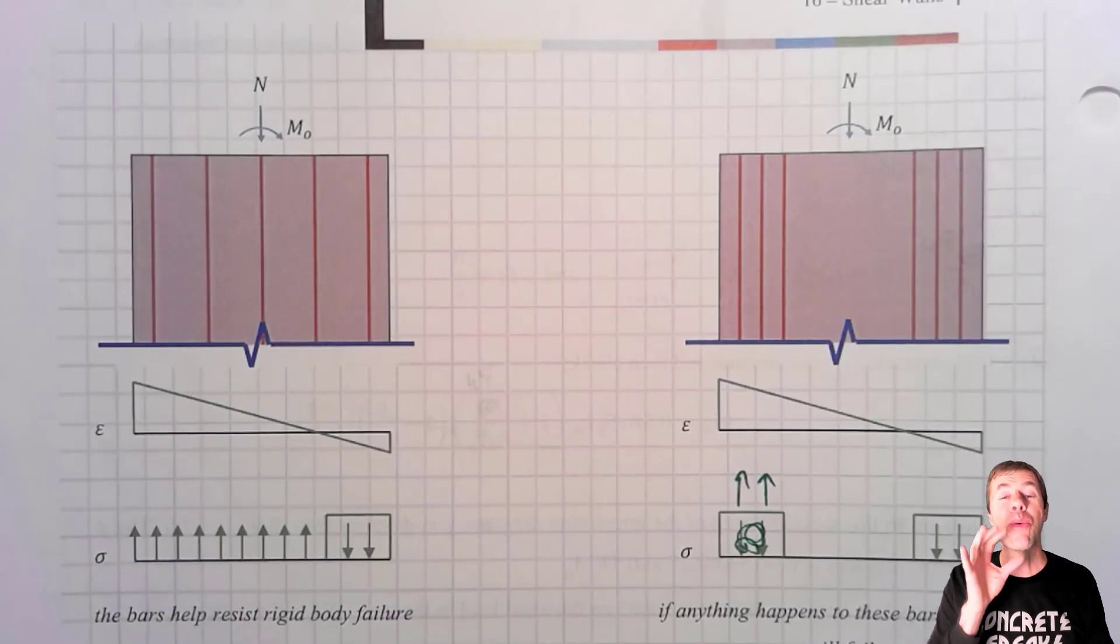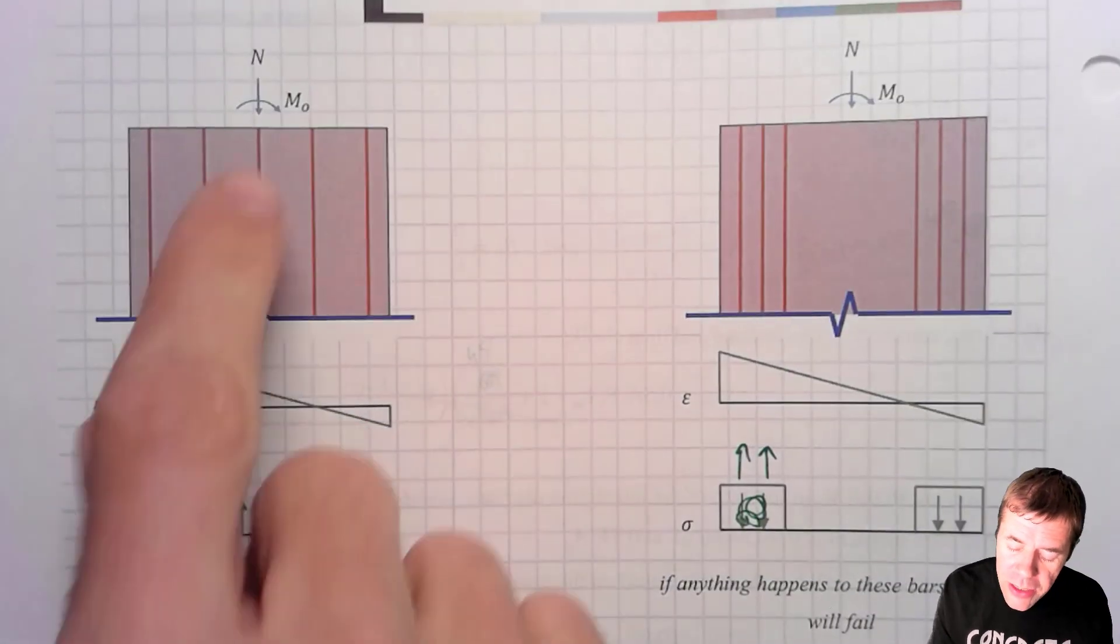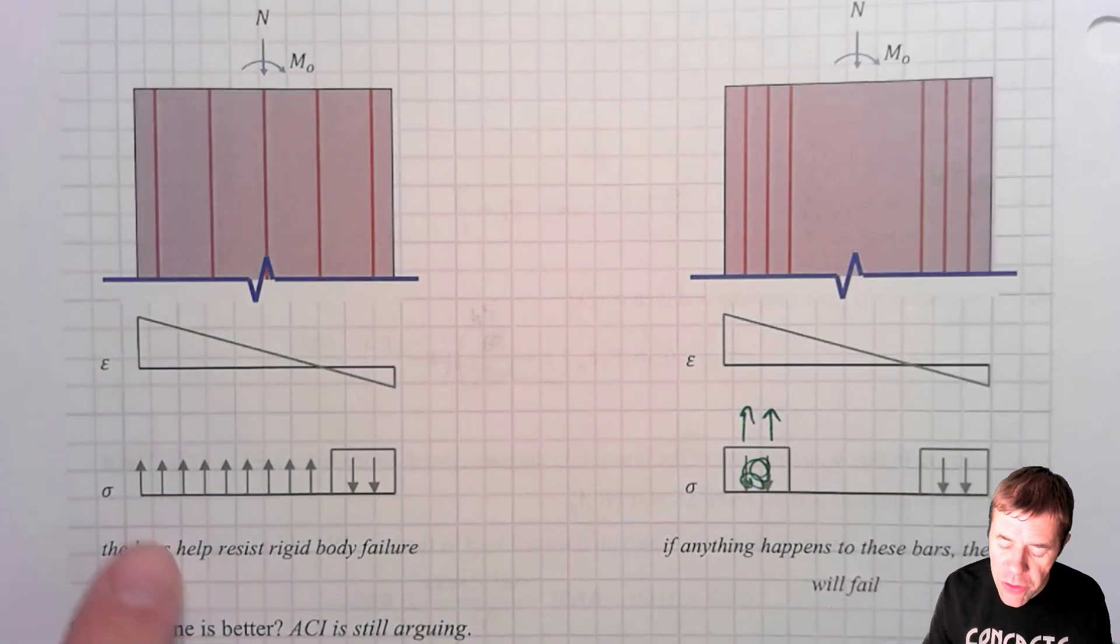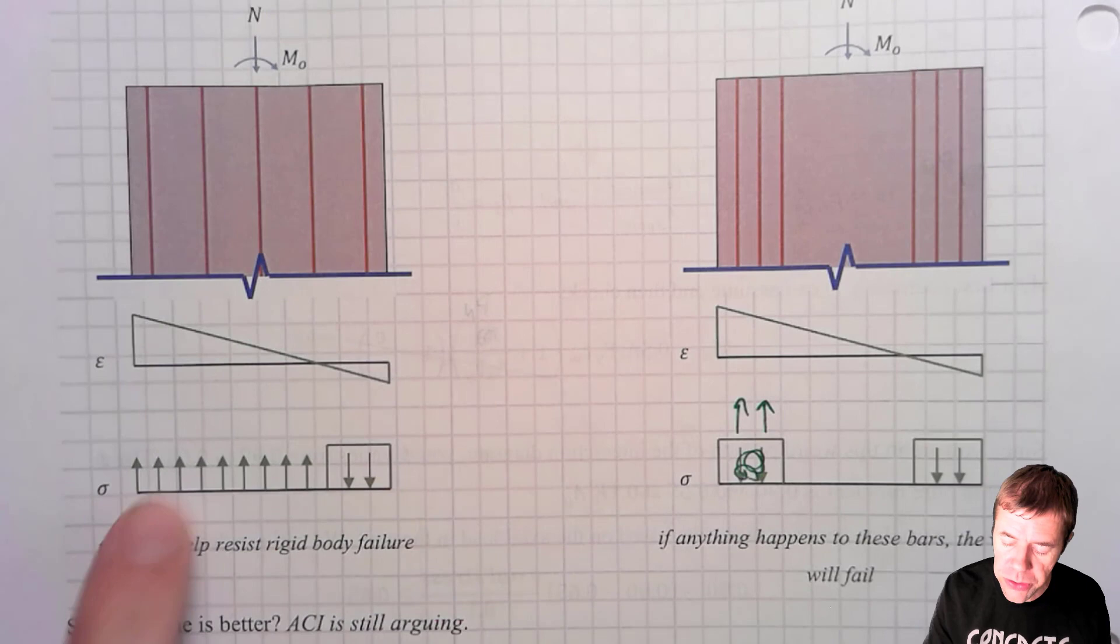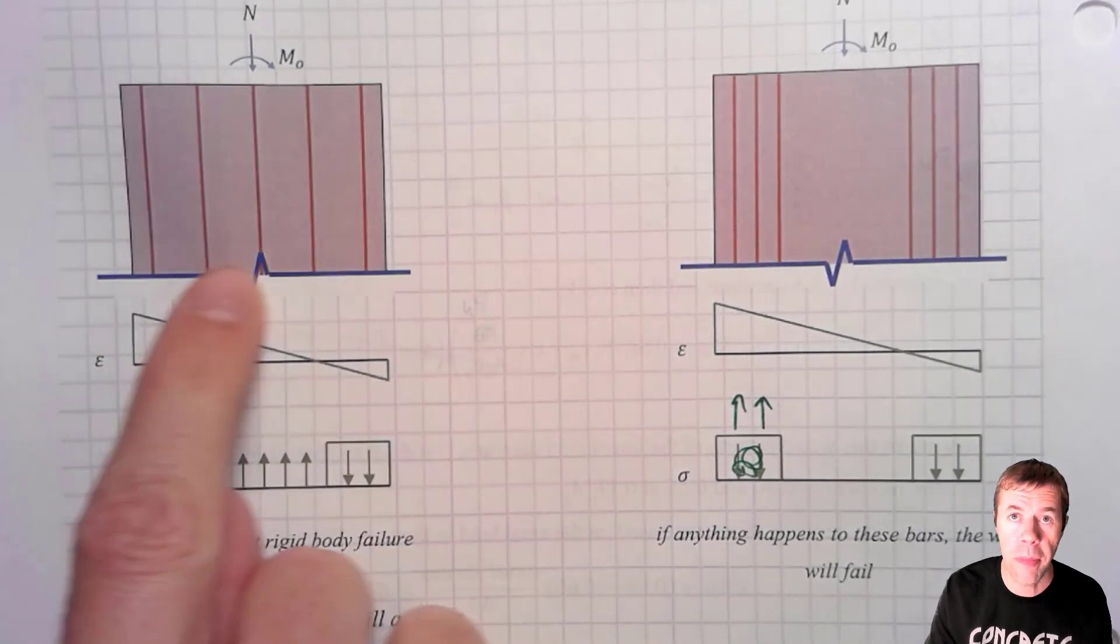I'm going to be teaching you to design walls that look something like this. They have moment, they have axial load on them, and they have uniform amount of steel all throughout the member.